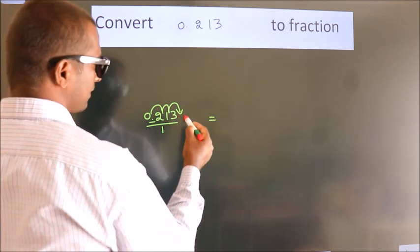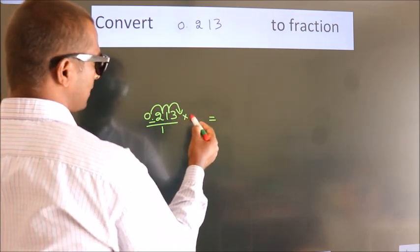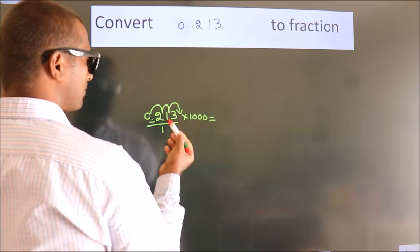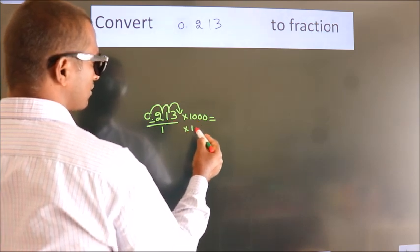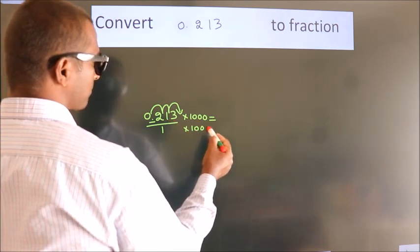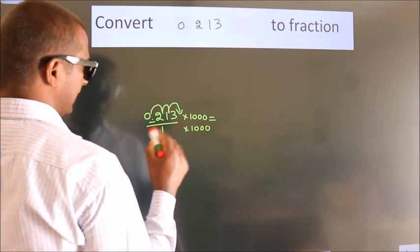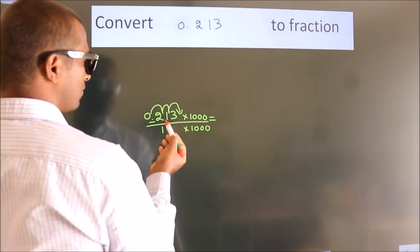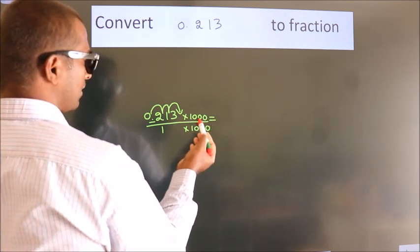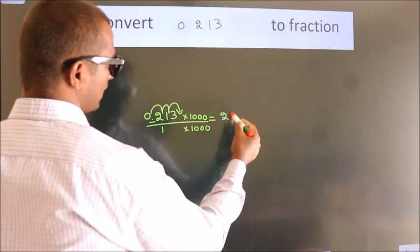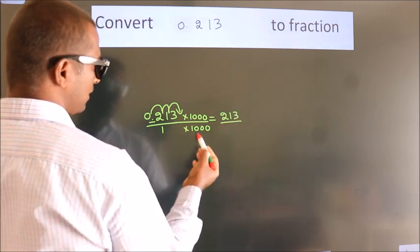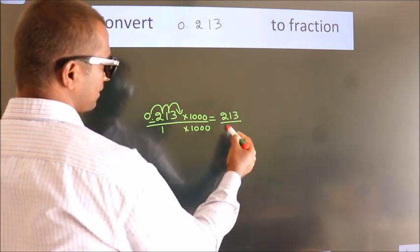For that, we have to multiply it with 1000. Whatever you are multiplying in the numerator, do the same in the denominator also. So 0.213 multiplied by 1000 gives 213, and 1 multiplied by 1000 gives 1000. So we get 213 over 1000.